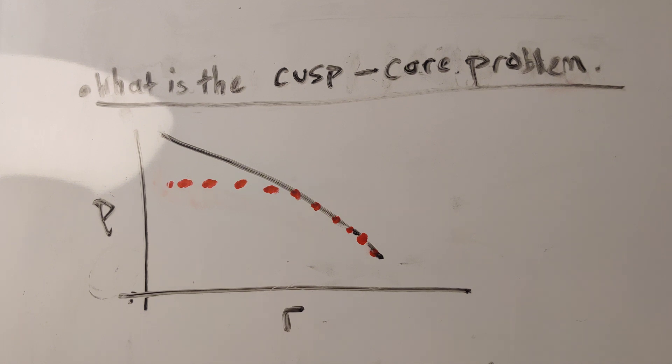In the previous video I talked about dark matter and I spoke about one of the problems that it brings, the missing satellite problem. And in this video I'll be talking about another problem that it brings, the cusp-core problem.